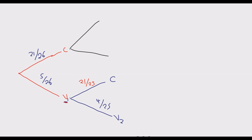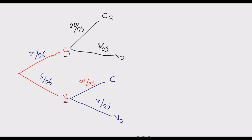For the second branch — if the first card selected was a consonant: the number of vowels remains unchanged at 5 out of 25. The number of consonants is reduced by one to 20, so there is a 20 out of 25 chance of picking a consonant on the second draw. These are all the possibilities on the tree diagram.